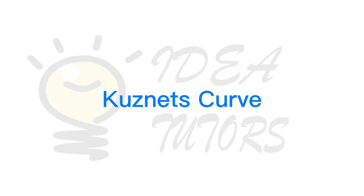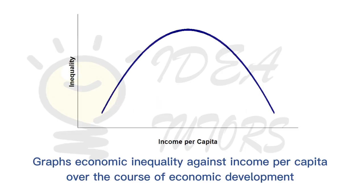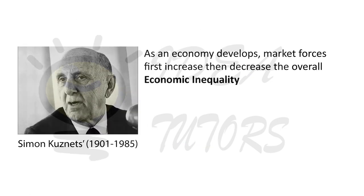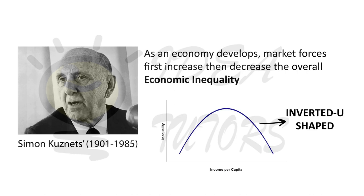The Kuznets Curve is a hypothetical curve that graphs economic inequality against income per capita. In the 1950s and 1960s, Simon Kuznets hypothesized that as an economy develops, market forces first increase then decrease the overall economic inequality of the society, which is illustrated by the inverted U shape of the Kuznets Curve.